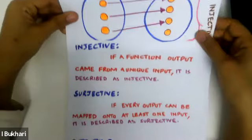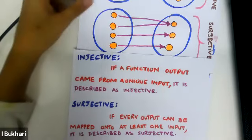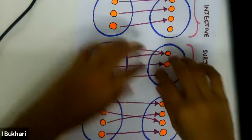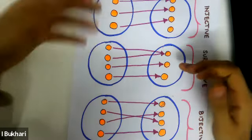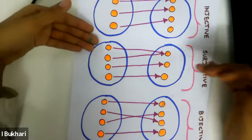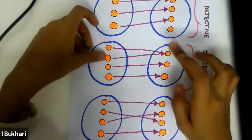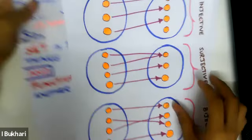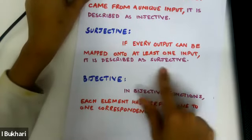Moving on to surjective: in a surjective relationship, each input can be mapped onto at least one output. It doesn't matter that two inputs have the same output, but at least every output is mapped onto at least one input. That is the definition of surjective.